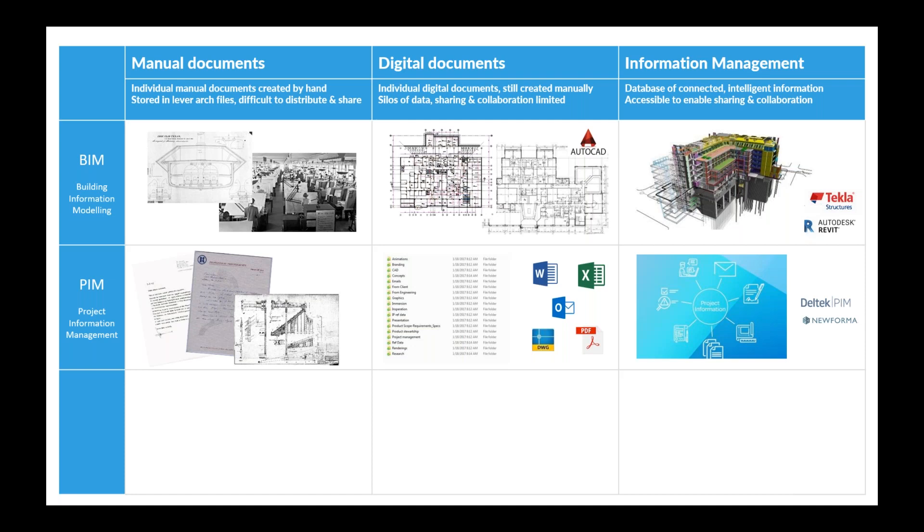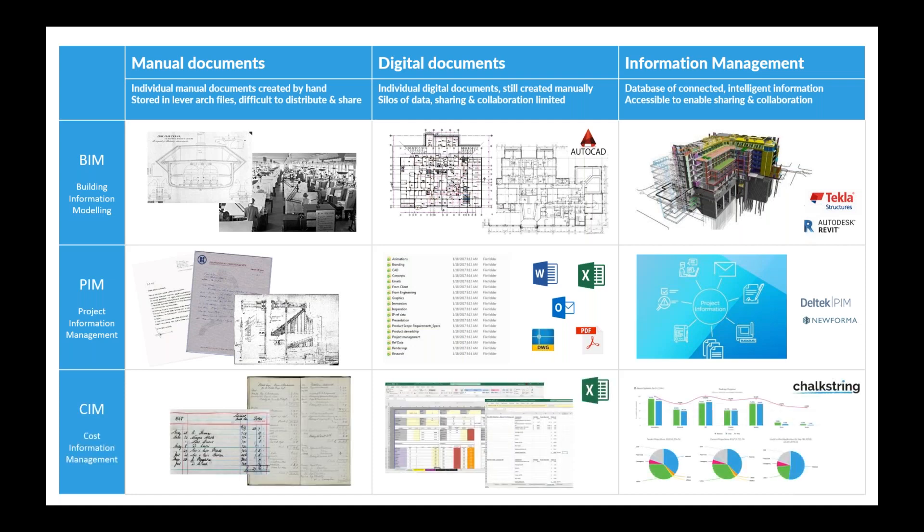CIM is exactly the same. We're going from handwritten ledger books in the dark ages, and currently we're very much in the middle section with lots of Excel files — a digital version of the same thing, but they're not intelligent: just text and numbers in a spreadsheet, lots of worksheets that don't talk to each other and are error-prone. The transformation here is about moving from that across to a CIM solution — in this case, Chalkstring — showing how you have an integrated system. It's not a new concept; it's one we've been doing for 20-30 years. CIM just follows the same path.